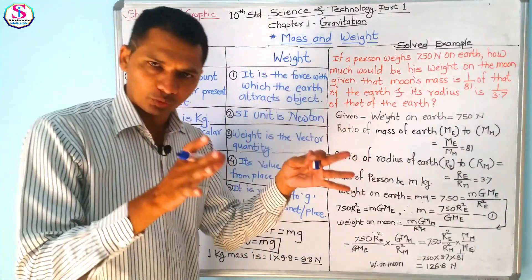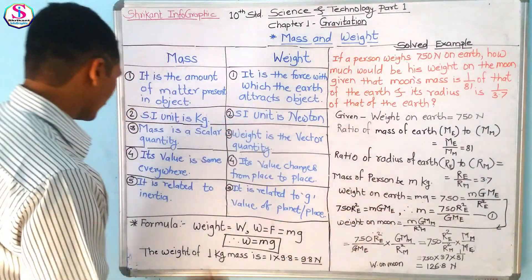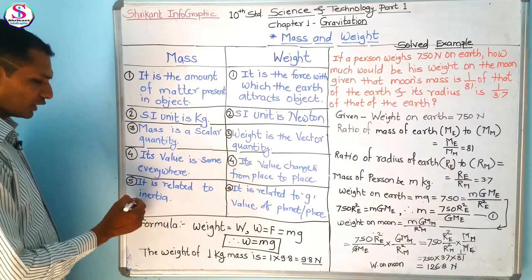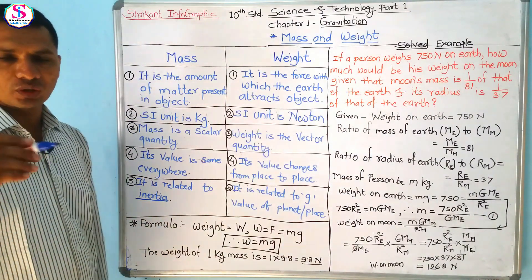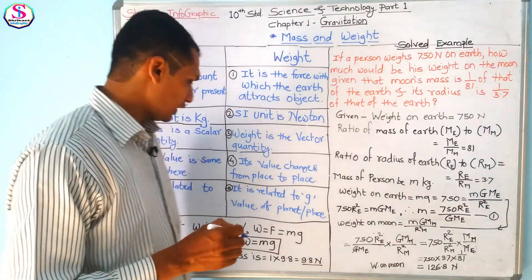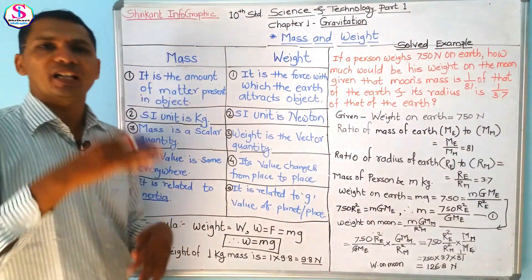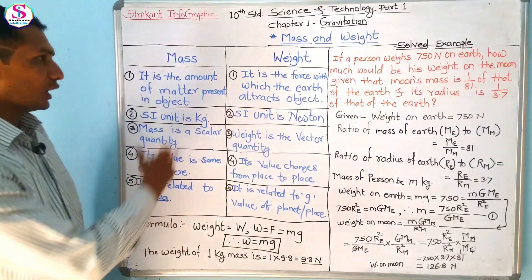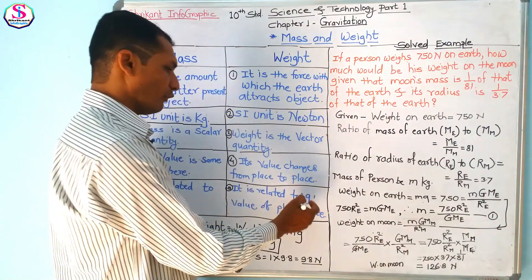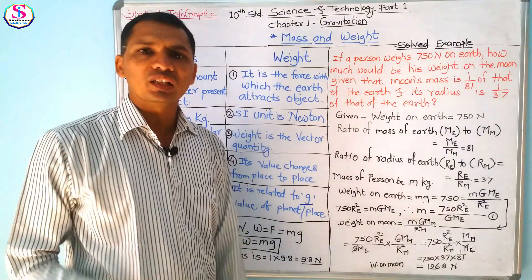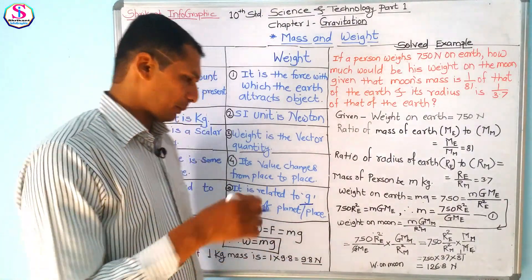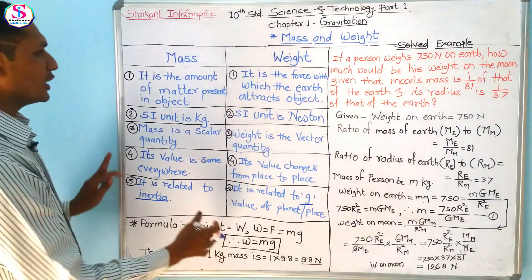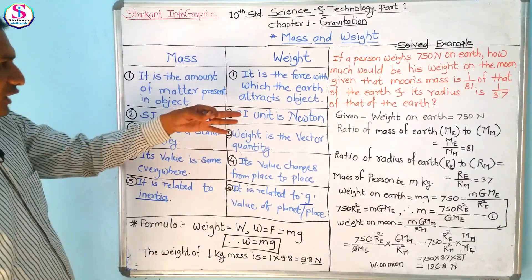Mass is related to the concept of inertia. As Newton states in the law of inertia, higher the mass, higher the inertia. So mass is related to inertia. But weight is related to the value of g — g is the acceleration due to gravity applied by that planet or that place.